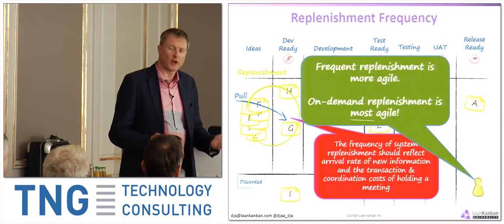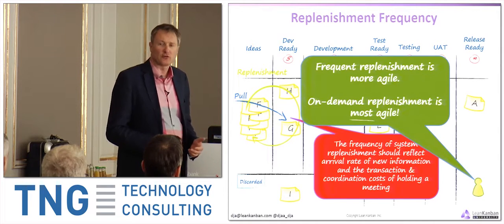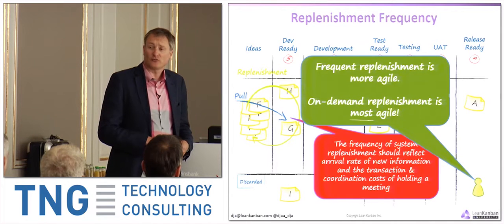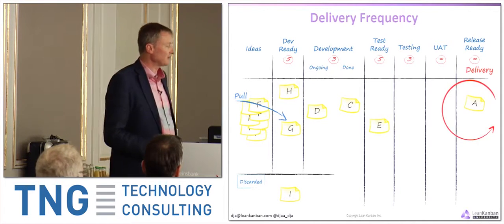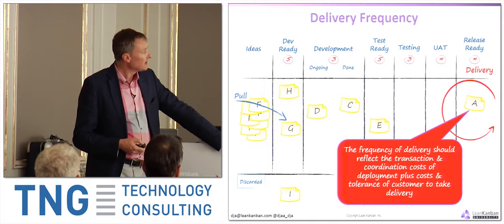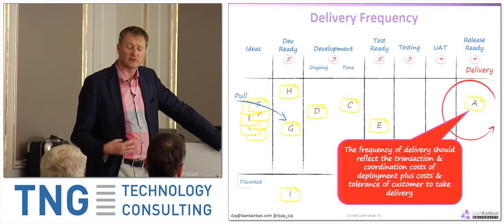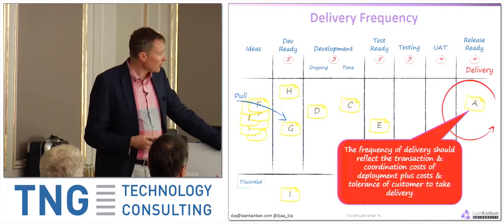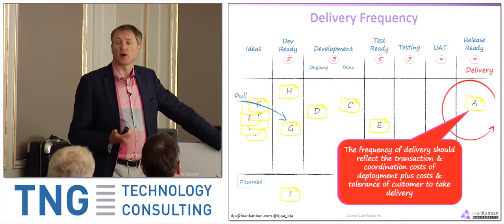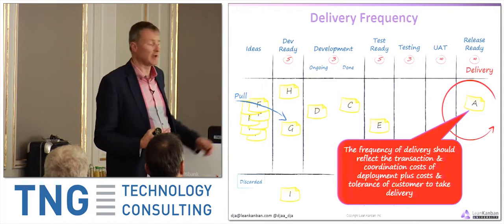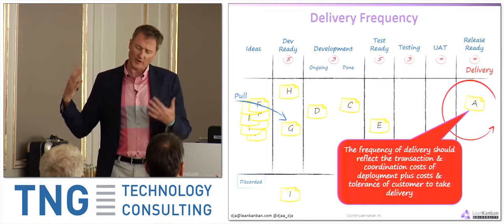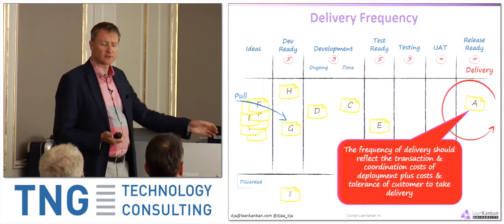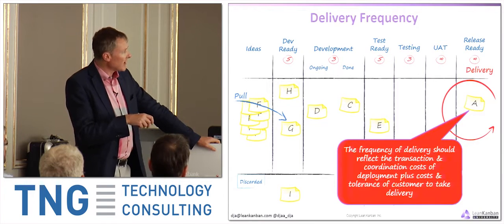Frequent replenishment isn't important if you don't have frequent new information. If you're running a very old, stable business like a hot rolling steel mill — technology designed maybe a hundred years ago that hasn't changed much — perhaps you don't need to replenish too often or be so terribly agile. The other dimension is delivery frequency: how often do we flush the system? In an ideal world you'd flush it on demand item by item, and that technology exists in the software world nowadays. However, there are transaction and coordination costs for the customer, who may not be capable of taking delivery as quickly as you can deliver it.